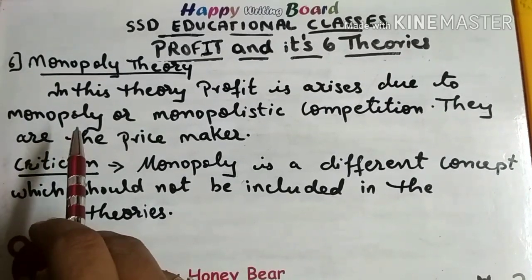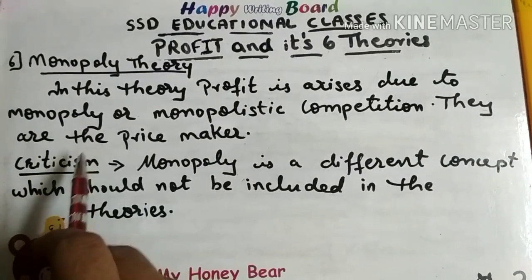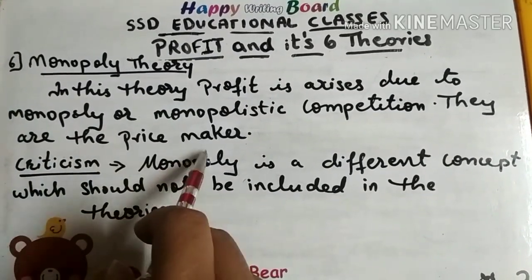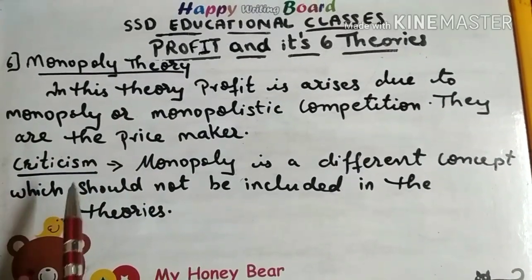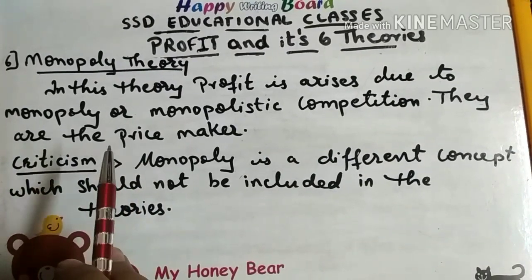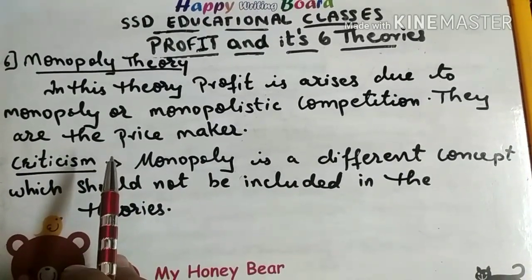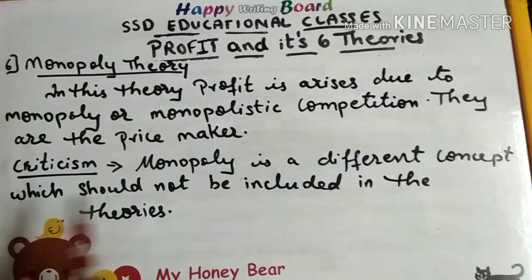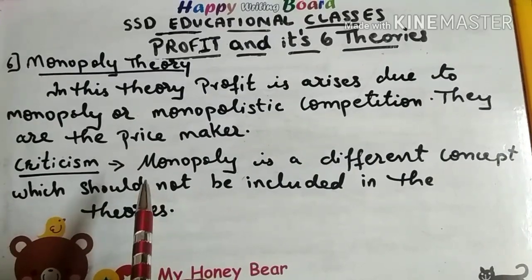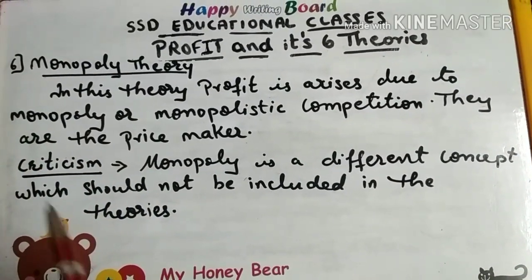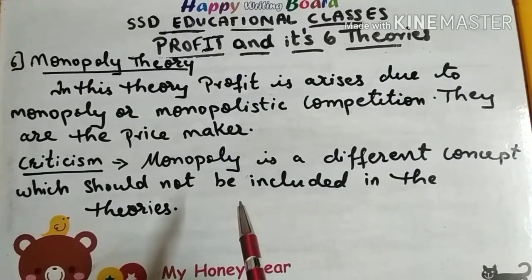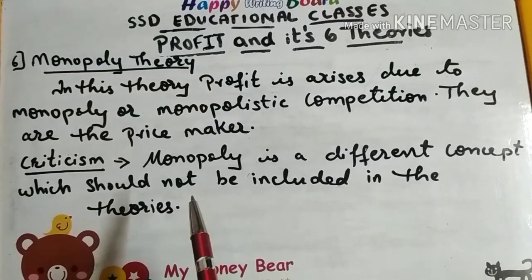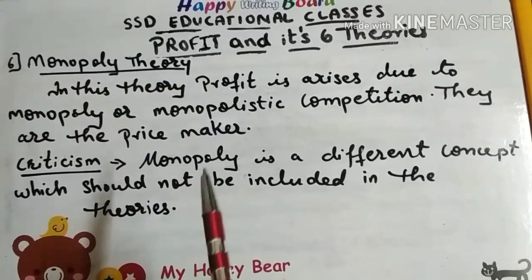In the Monopoly Theory of Profit, a monopoly means there is a single firm producing a single product — the firm is a price maker and can set whatever price it wants. Where there is only a single seller, there is a lot of profit. However, this theory is criticized because monopoly is a different concept and should be separated from other profit theories.